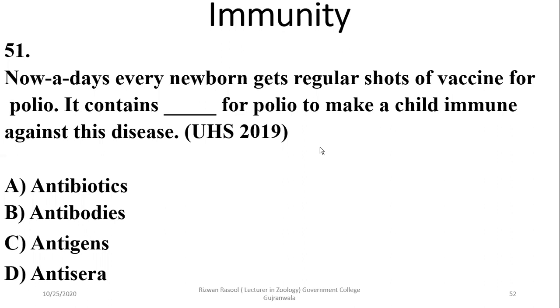Question 51: Every newborn gets regular shots of vaccine for polio — it contains antigens for polio to make the child immune against the disease. The right option is Charlie.